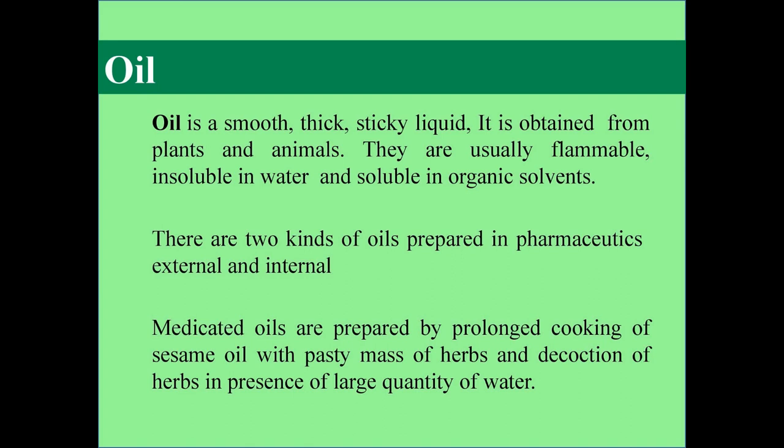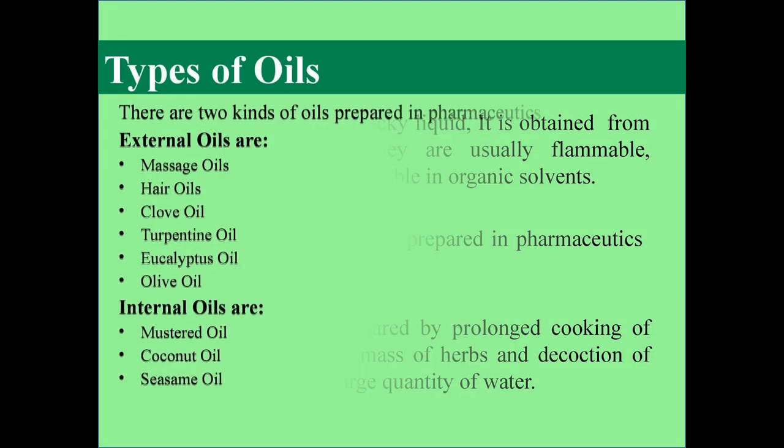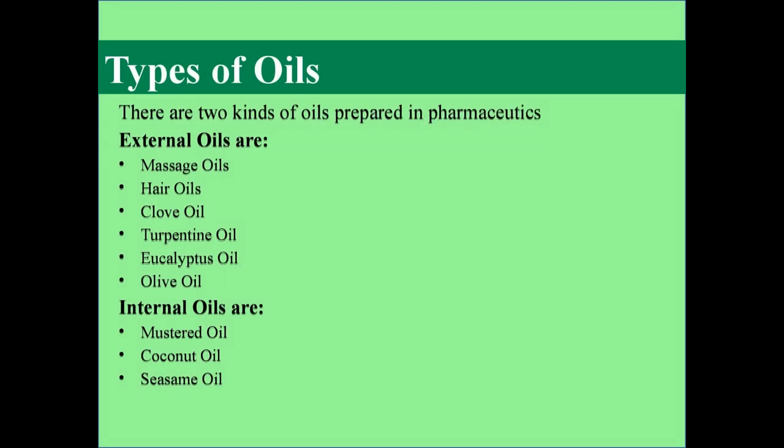Oil is defined as a thick and sticky liquid, as well as a smooth liquid. It is obtained from plants and animals. Oils are insoluble in water and soluble in organic solvents. They are easily flammable. There are two kinds of oil prepared in pharmaceutics: external and internal.